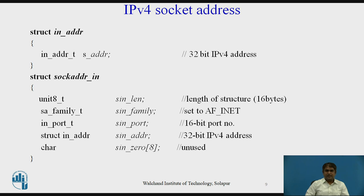Then, the struct sockaddr_in has five fields: sin_len — the length of the structure, 16 bytes; sin_family — set to AF_INET; sin_port — the 16-bit port number; sin_addr — the 32-bit IPv4 address; and char sin_zero — which is unused.